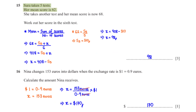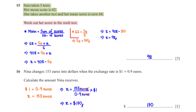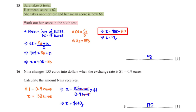Sarah takes 5 tests and her mean score is 62. She takes another test and her mean score is now 68. Work out her score in the 6th test. For the 6 tests, the mean is 68, so the sum of the 6 tests equals the sum of the 5 tests plus the score of the 6th test, which we call x. When we multiply both sides by 6, we get 408 equals s5 plus x. We've been given the mean for the 5 tests to be 62, equal to the sum of the 5 tests divided by 5. When we multiply both sides by 5, we get the sum of the 5 tests to be 310. So x is 408 minus 310, which is equal to 98.